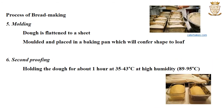In the fifth stage of bread making, i.e., molding, the dough is flattened to a sheet and then molded again and placed in a baking pan, which gives a particular shape to the loaf. In the next stage, i.e., the second proofing, this consists of holding the dough for about 1 hour at 35 to 43 degrees Celsius at a high level of humidity.